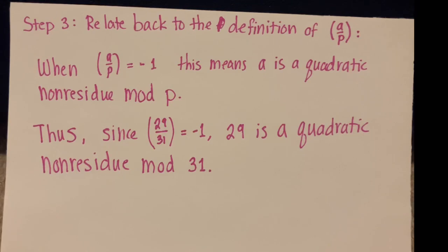Step 3 is relate this back to the definition of a on p, and you use that to determine whether or not a, which in this case is 29, is a quadratic residue modulo p, which in this case is 31. And we conclude that it is not.